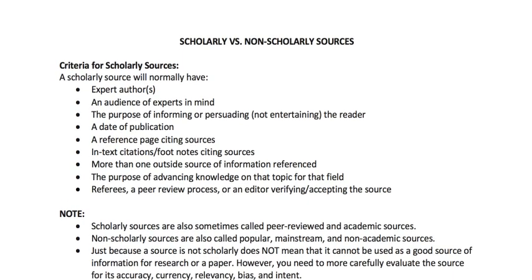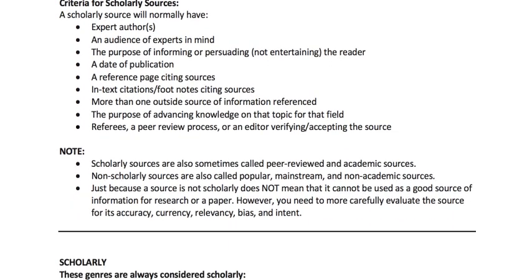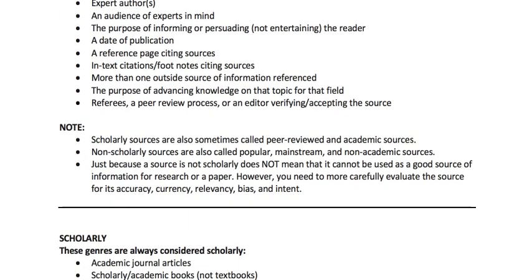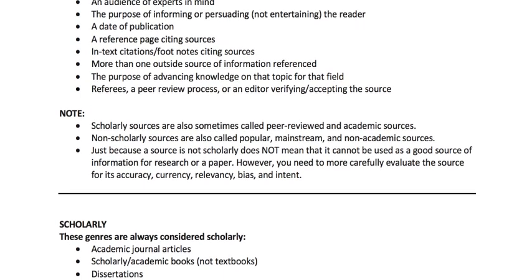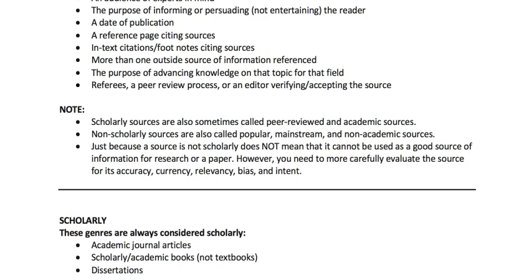The criteria for scholarly sources is that they will have an expert author or authors — people writing in their area of expertise. They are writing for other experts in the field, so their audience is not the general public or students, but other people working and researching in their field. For example, if a medical doctor is writing about COVID-19, he or she will be writing for other medical doctors and researchers to advance the field of knowledge. The purpose is going to be to inform, or very occasionally to persuade.